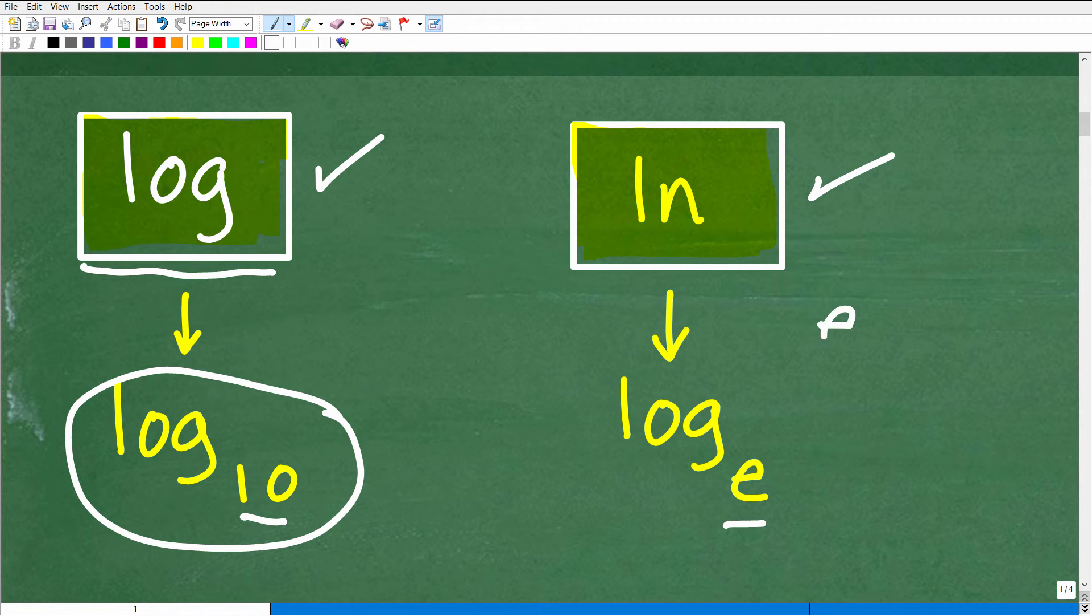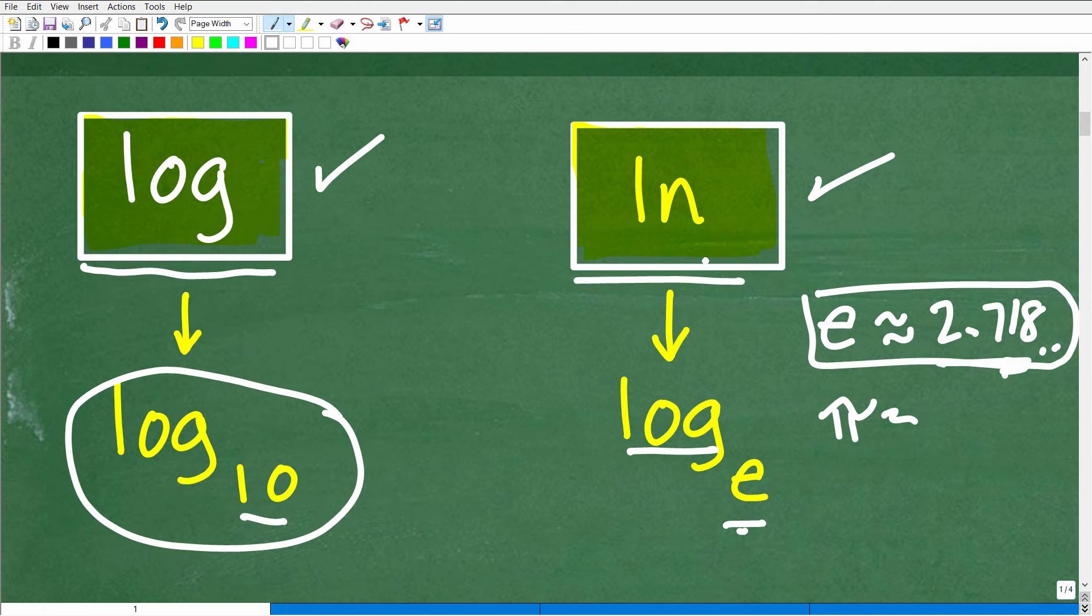Now, the LN button is log base E. So E is the natural base. So E is approximately a number, I think it's like 2.718, etc. I should know this number. It's a very famous number. It's just as important as pi, for example. Anyways, this is the natural base, but this is log base E. It's the LN button.